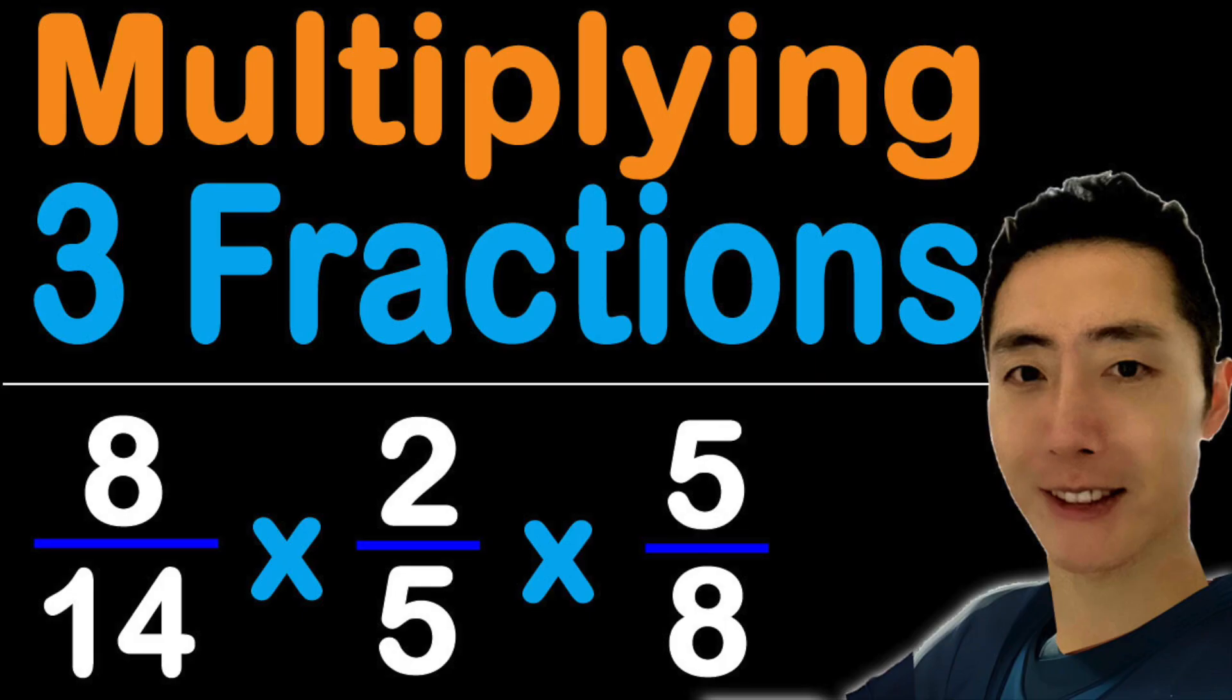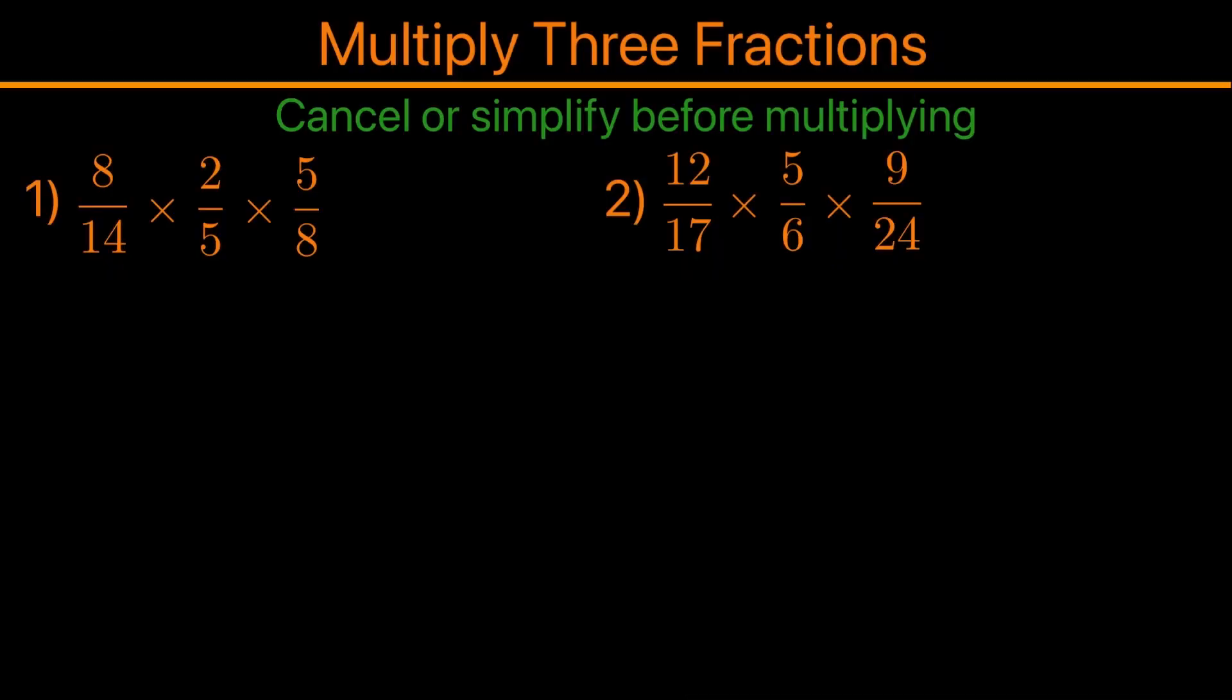In this video, I'll be going over how to multiply three fractions. When we handle multiplication of three fractions, we want to first cancel or simplify before we multiply, and the reason for that is because it will become a very big number if you just proceed and multiply the numbers together and then try to simplify afterwards.